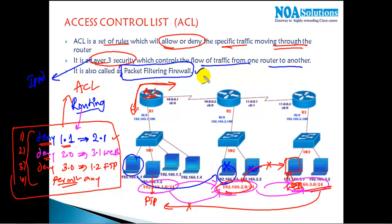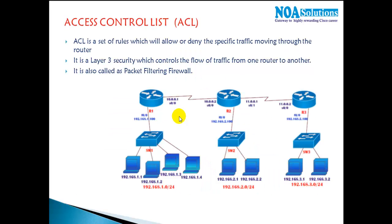ACL doesn't do the complete job of a firewall — it's a basic filtering mechanism you can implement on routers to allow or deny selected services or selected hosts moving through the router. This is just a basic overview of ACLs; we'll get into more detail as we go.